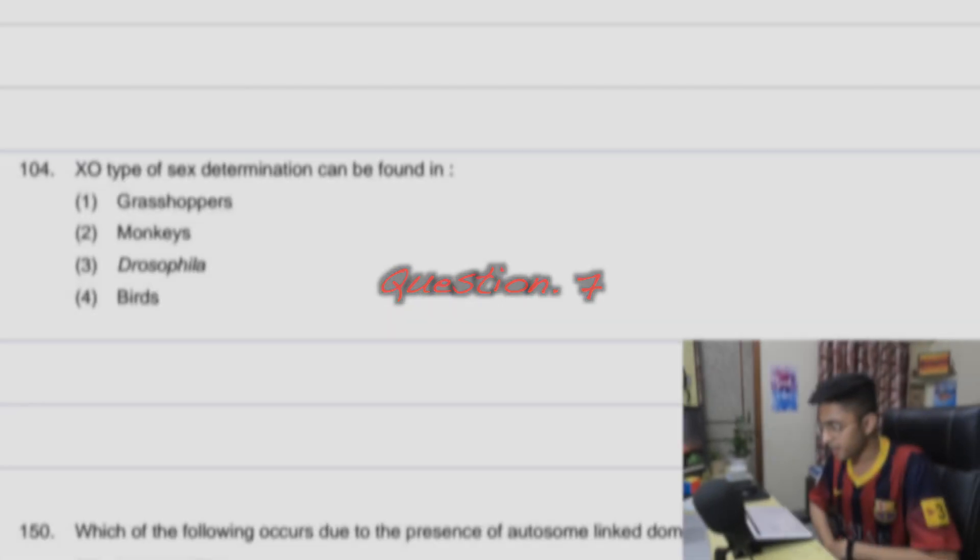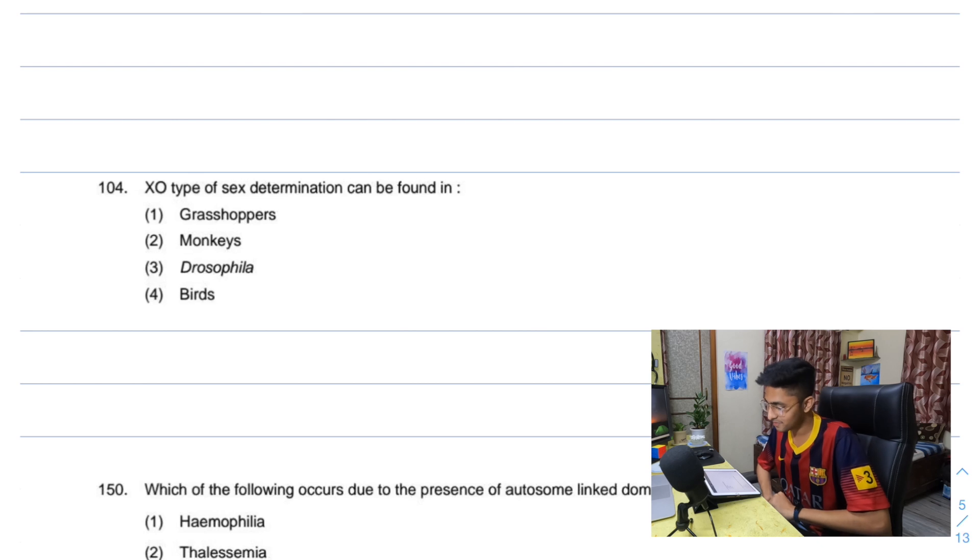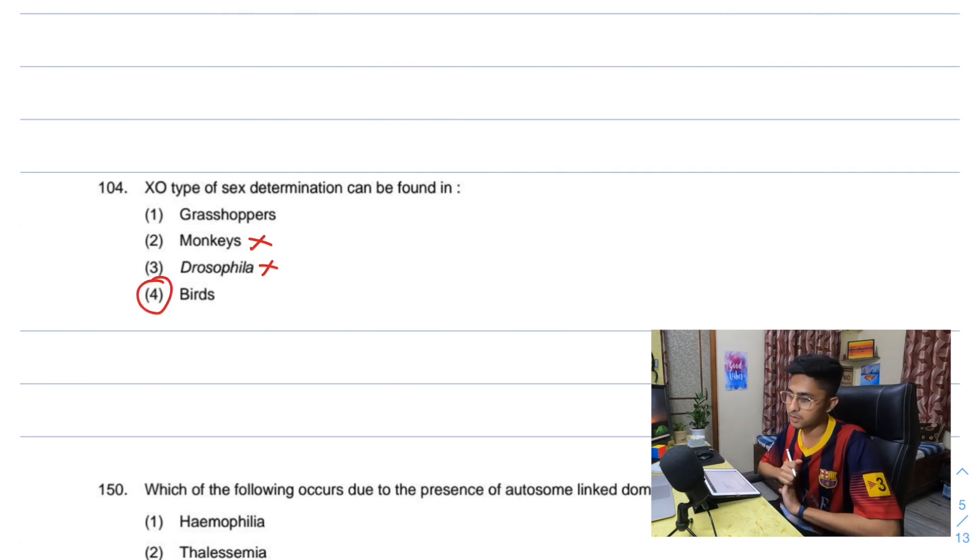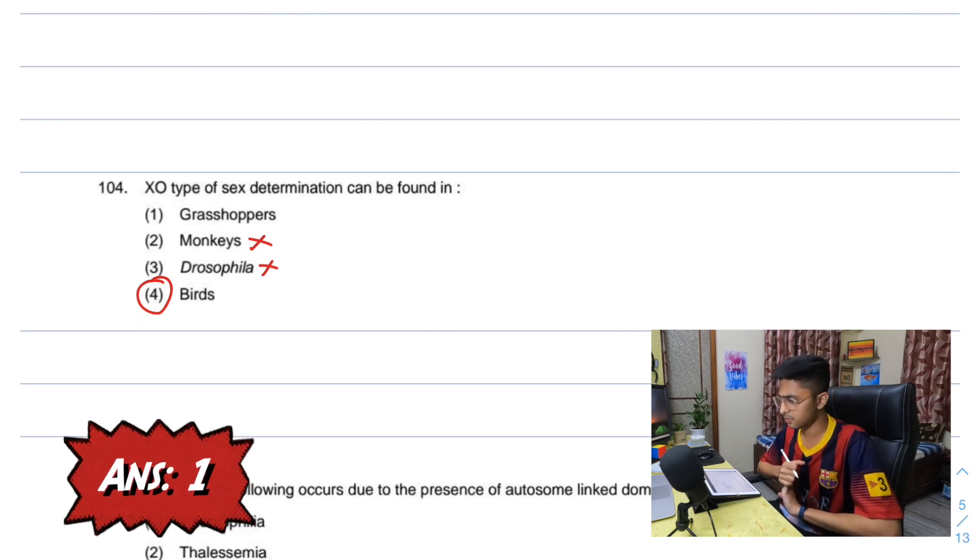XO type of sex determination can be found in - I thought they'll ask male female and stuff. I'm just studying humans, but I probably have read this. Definitely not monkeys. Drosophila Melanogaster, I remember it's XY like humans. No XO. Grasshopper or birds? Birds give eggs but the females give eggs. I don't remember studying of the sex difference in grasshopper. I'll just go with birds, XO because the female probably, because the female directly lays eggs. I'll just go with birds.